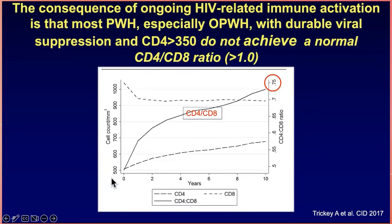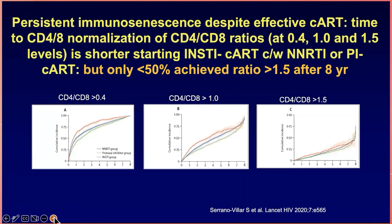The consequences are that in most people, especially older people with HIV, despite durable viral suppression and even if the plateau CD4 counts are high, they do not achieve a normal CD4 to CD8 ratio. Only a minority of individuals will have a normal CD4 to CD8 ratio, which is usually greater than one. This is associated with ongoing immunosenescence despite effective antiretroviral therapy, and recent information shows that differences in the time to normalize the CD4 to CD8 ratio may be related to the type of antiretroviral therapy used.